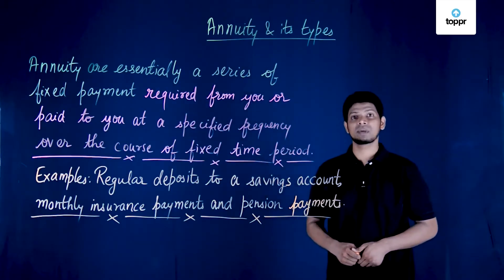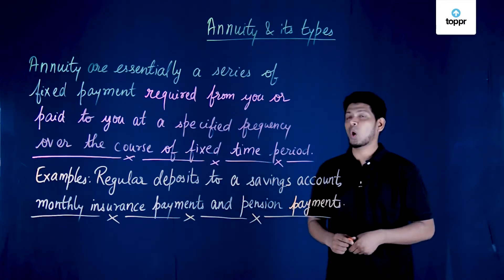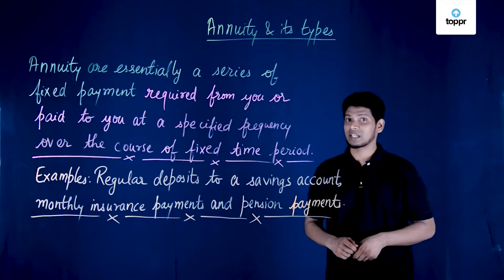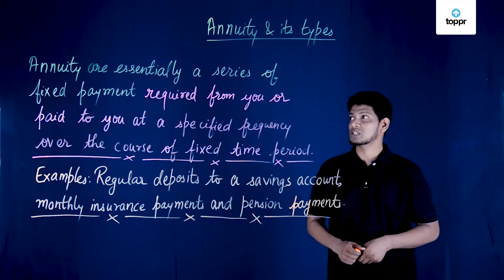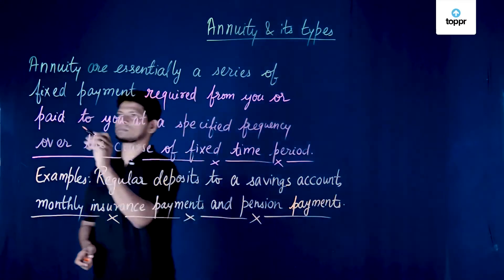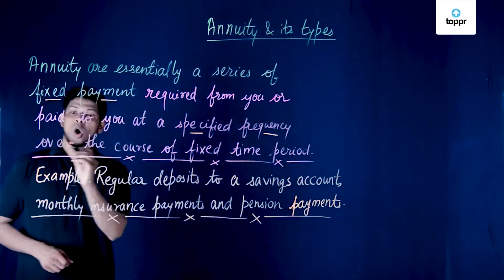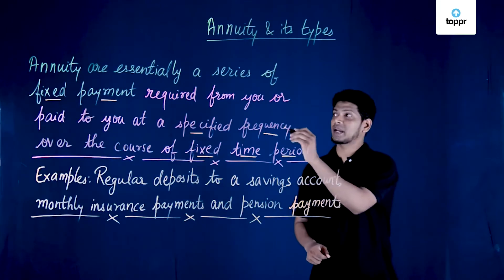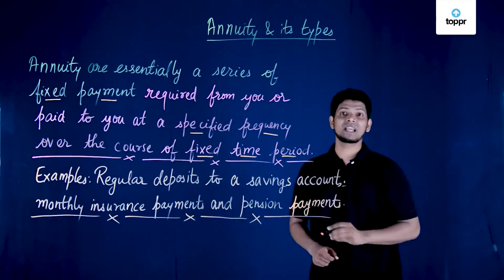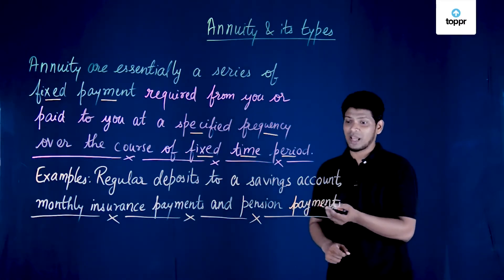There are three main things which define annuity: fixed payment, specified frequency — that is monthly, quarterly, or yearly — and a fixed time period, which may be 14 or 15 years. Examples of annuity include regular deposits to a savings account, monthly insurance payments, and pension payments.